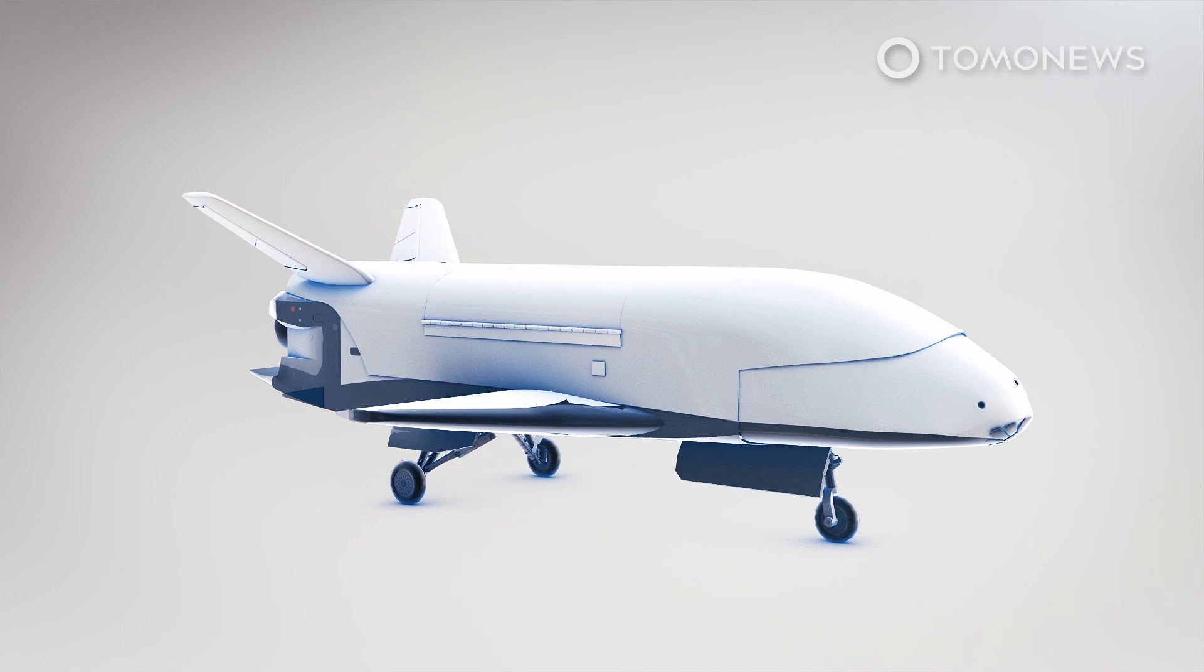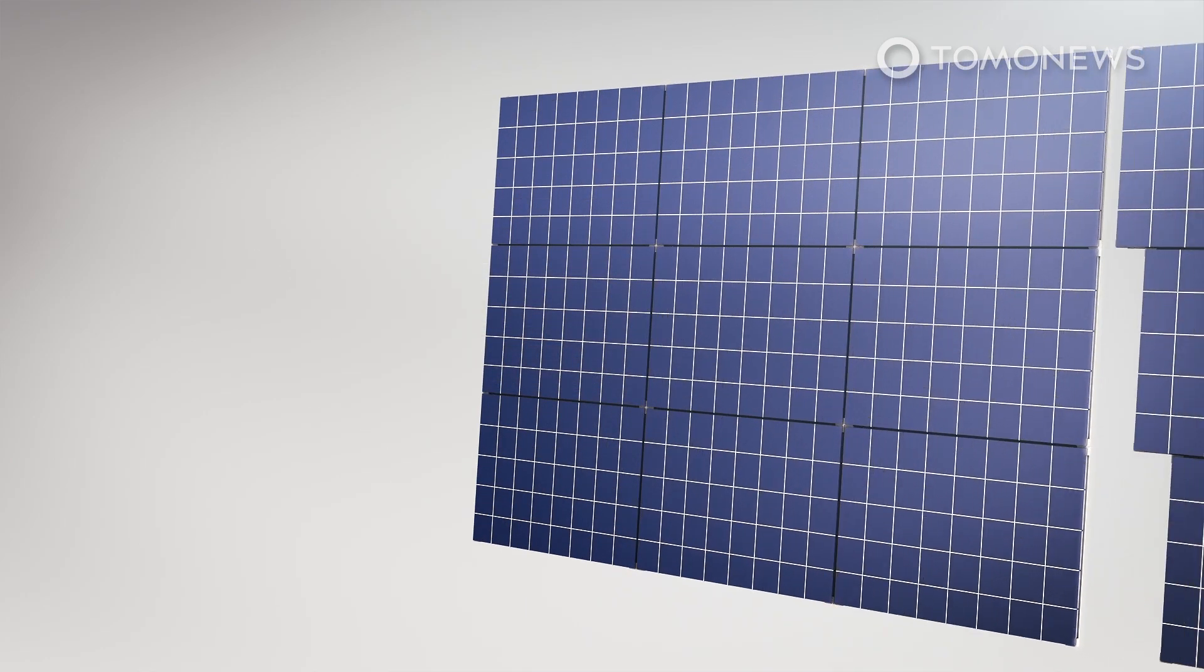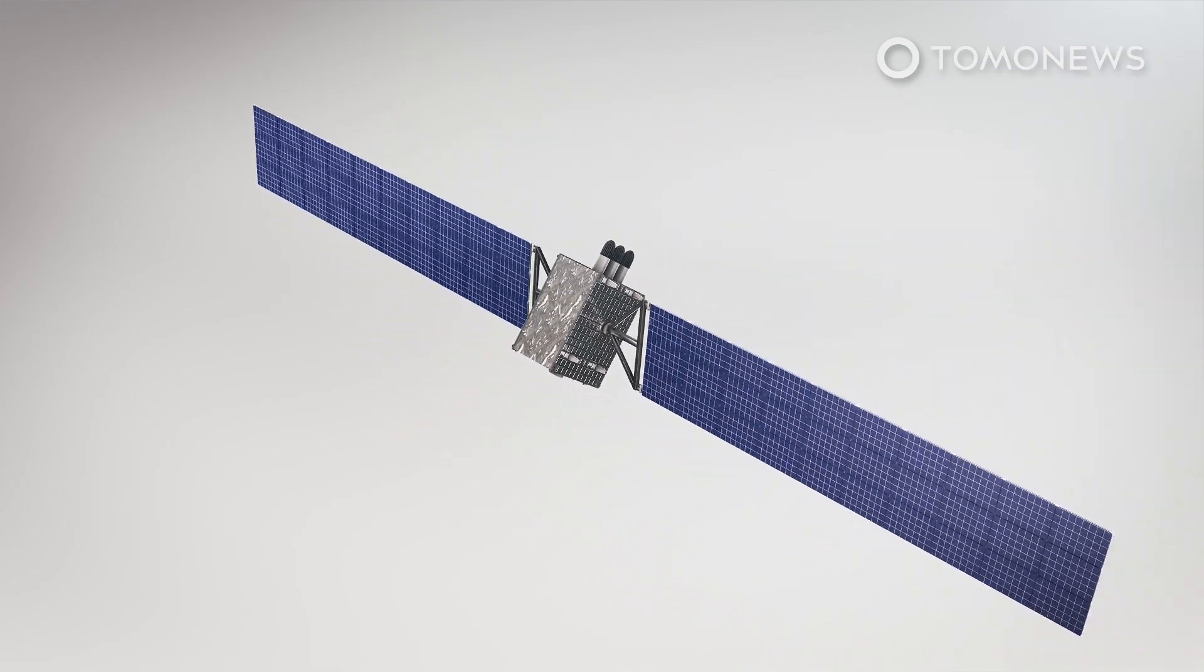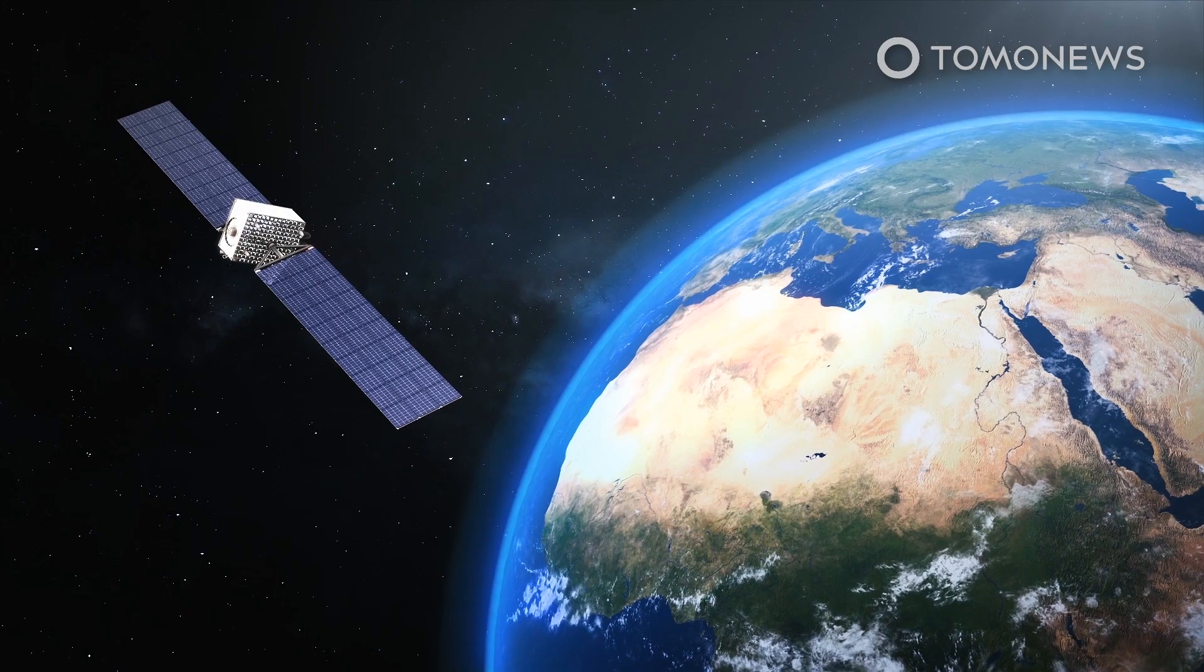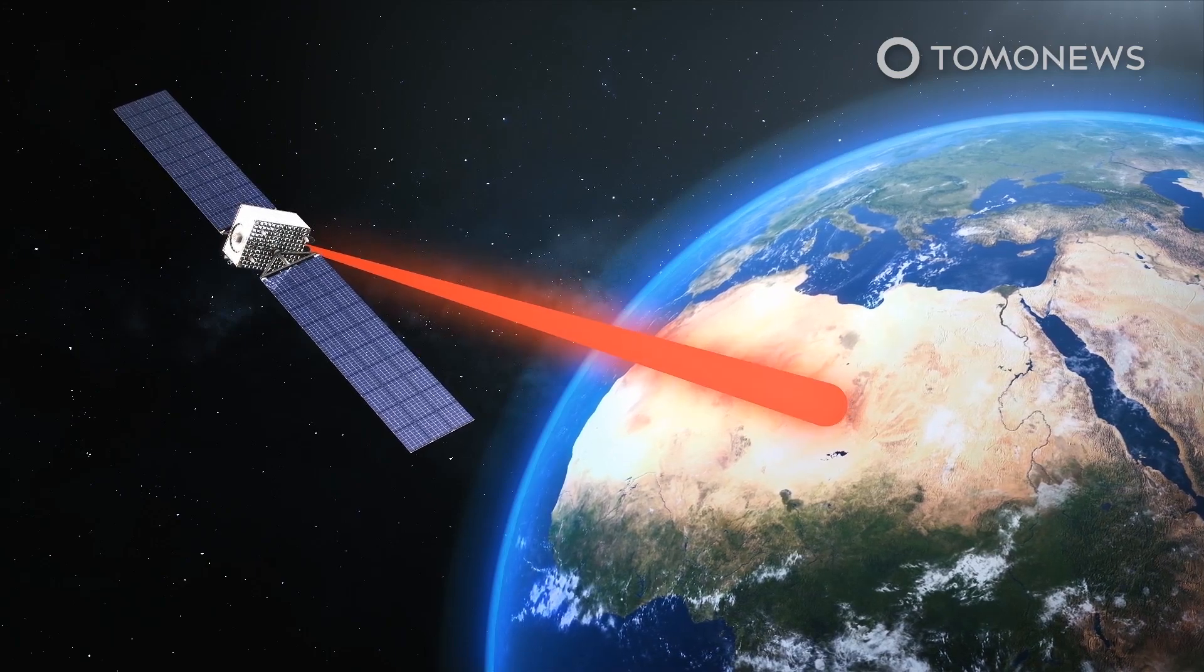The Photovoltaic Radio Frequency Antenna Module, or PRAM for short, is currently the size of a pizza box, but the technology could be scaled up to send massive amounts of clean and renewable energy to Earth via microwaves, possibly even enough energy to power whole cities.